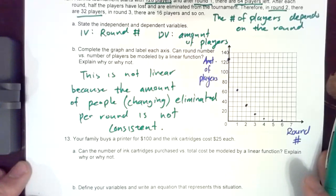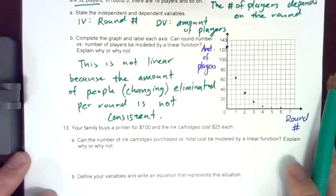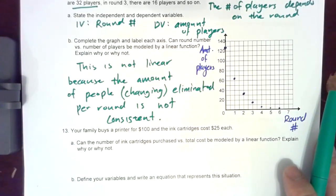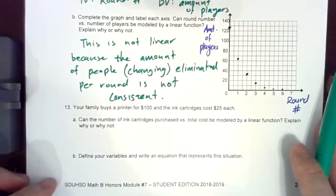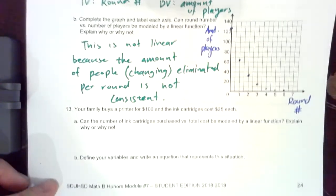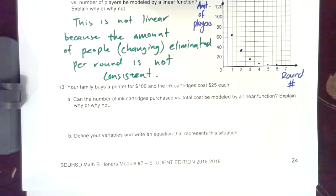Hopefully that was something that you could understand and that's really how a tournament works. Okay so our last question: your family buys a printer for $100 and the ink cartridges cost $25 each. Can the number of ink cartridges purchased versus total cost be modeled by a linear function? Explain why or why not.